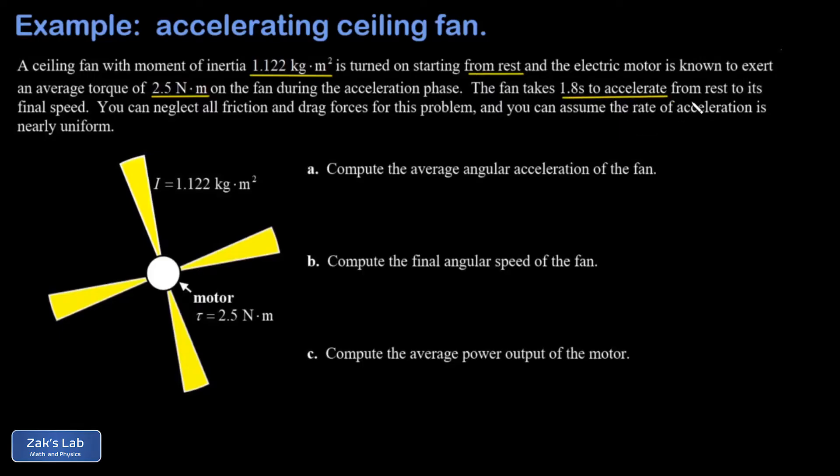We're asked a series of questions. First, we want the average angular acceleration of the fan. For this we're using the rotational equivalent of Newton's second law: tau equals I alpha, where tau is the torque, I is the moment of inertia, and alpha is the angular acceleration.